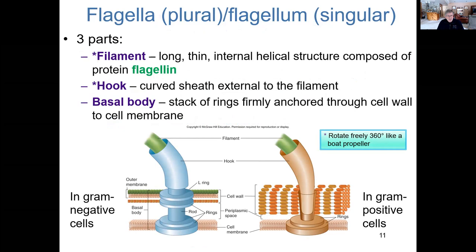A flagellum has three major structural components: the filament, made of an elastic protein called flagellin; the hook, an external feature surrounding the filament; and the basal body, which is embedded within the cell wall and cell membrane. We'll be getting into differences between gram-positive and gram-negative cell walls. You may recall from an earlier chapter that gram-positive cells stain purple while gram-negative cells stain pink or red, depending on cell wall constituents.